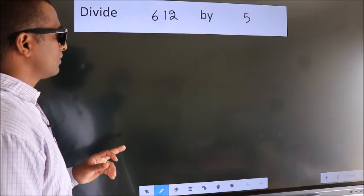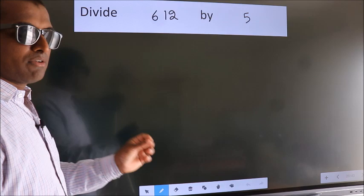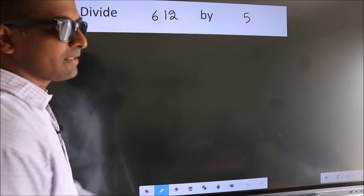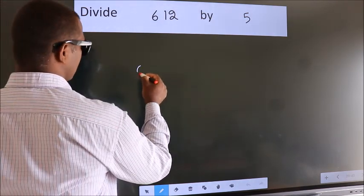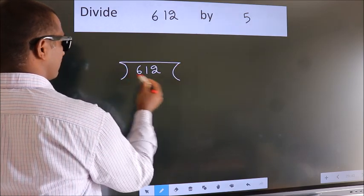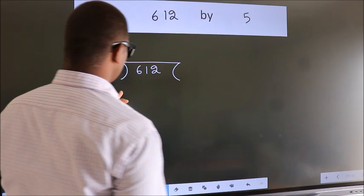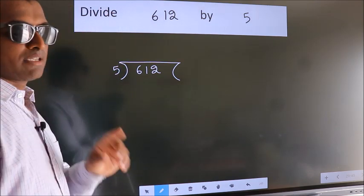Divide 612 by 5. To do this division, we should frame it in this way. 612 here, 5 here. This is your step 1.